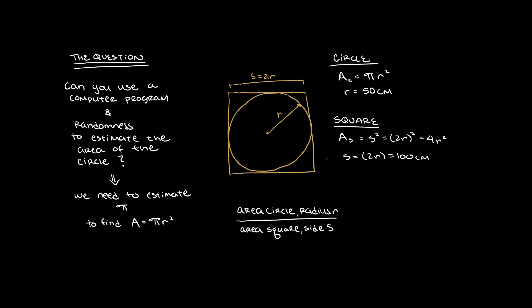Okay, so what would the ratio of the area of the circle to the area of the square be? Well, the R squared cancels, leaving the ratio to equal Pi over 4.